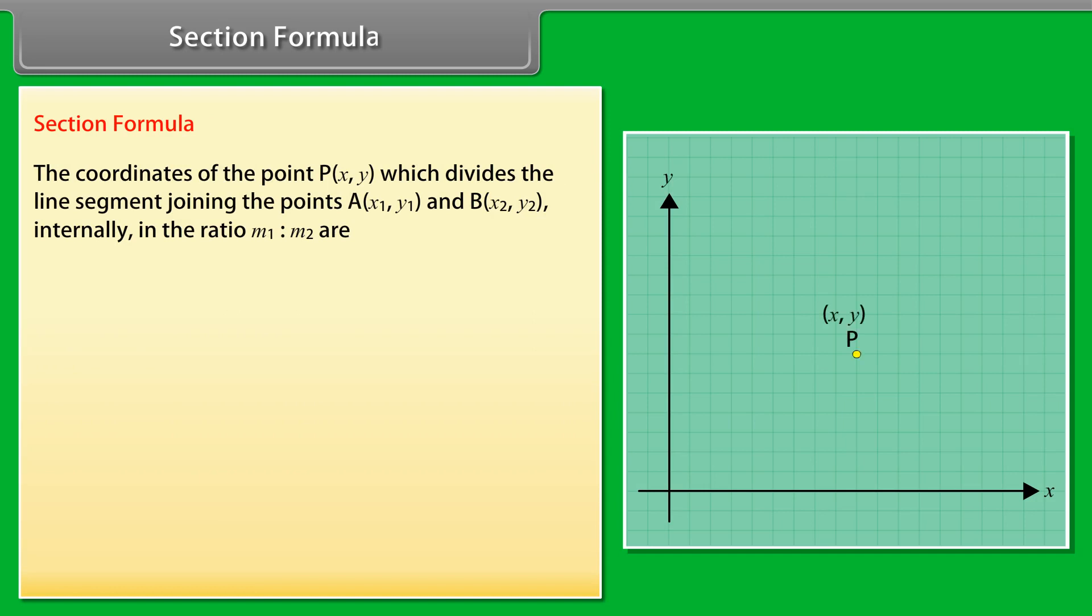Section Formula. The coordinates of the point P(X, Y) which divides the line segment joining the points A(X1, Y1) and B(X2, Y2) internally in the ratio M1 is to M2 are: M1X2 plus M2X1 by M1 plus M2, M1Y2 plus M2Y1 by M1 plus M2.